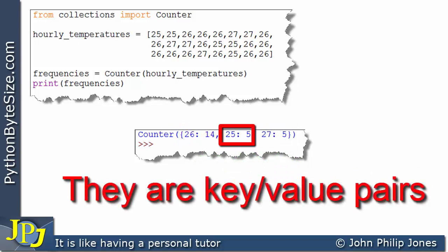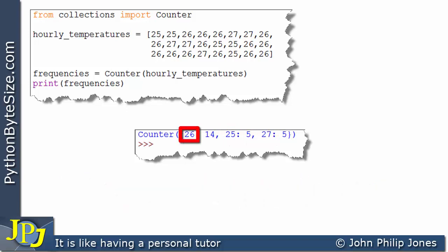This is an entry in the dictionary, this is and this is. This is the key and this key happens to be one of the temperatures that appears in this list, and what follows it is 14. If you were to go to that list and count how many times 26 appeared, you would find that it would appear 14 times.